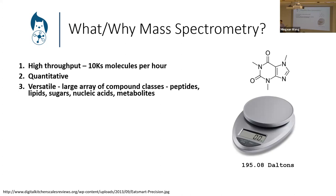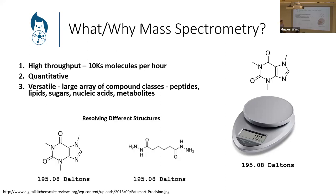The technique that the field uses is mass spectrometry. Why do we use mass spectrometry specifically? It's high throughput — we can measure tens of thousands of molecules per hour, and these days it's upping by an order of magnitude. It can be quantitative, with a few asterisks around the level of quantification. And unlike technologies like sequencing, which measures one type of molecule, we can measure many different types. Mass spectrometry is essentially a very fancy, very expensive scale — instead of measuring onions, we start measuring molecules.